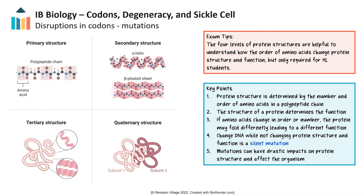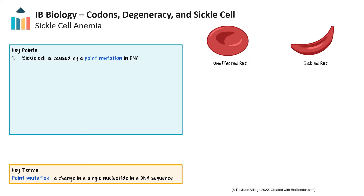However, mutations can sometimes have a drastic impact on protein structure, which will then have an effect on the organism. For a more in-depth look at the different types of mutations and their effects, check out our video on mutations. An example of a mutation is sickle cell anemia. This mutation occurs on one of the genes that codes for hemoglobin, the protein that occurs in red blood cells. The function of hemoglobin is to transport oxygen from the lungs to body tissue and transport carbon dioxide, a waste product, back to the lungs.